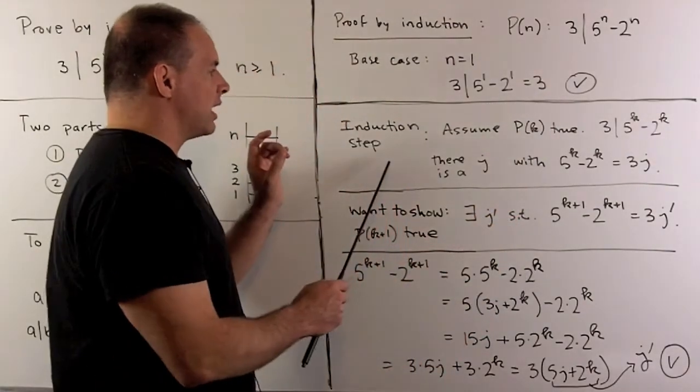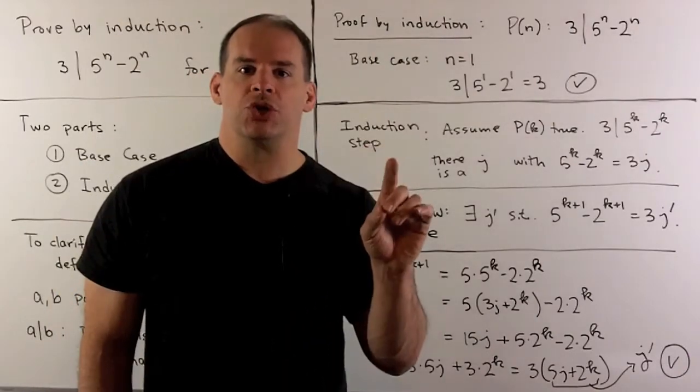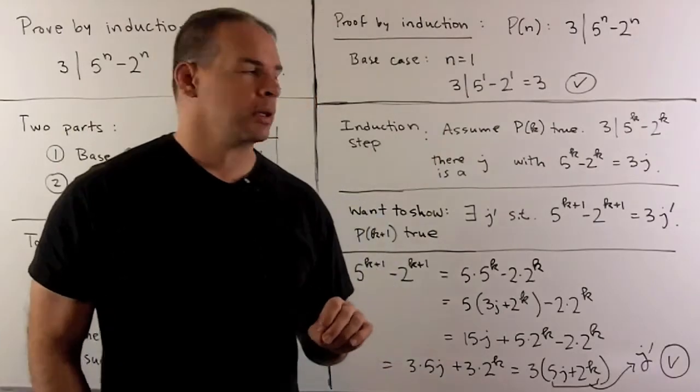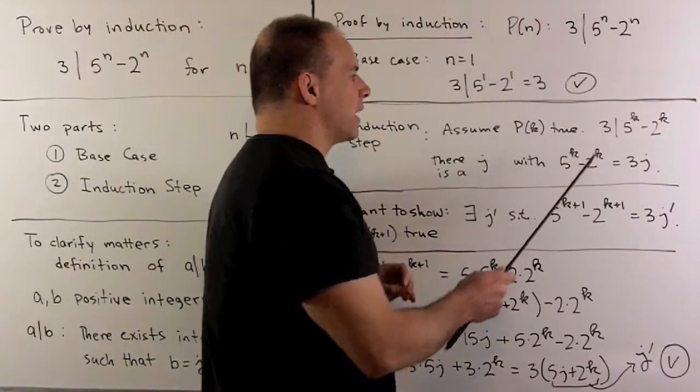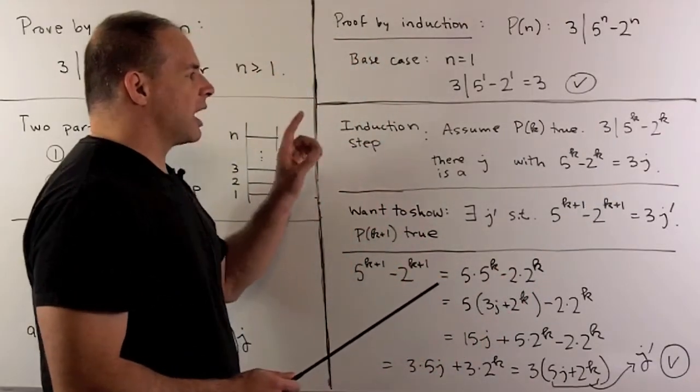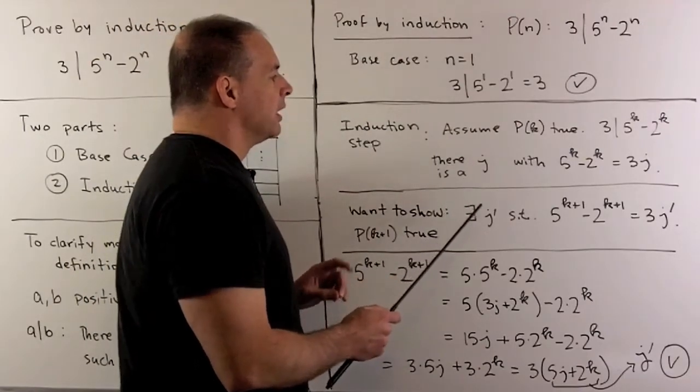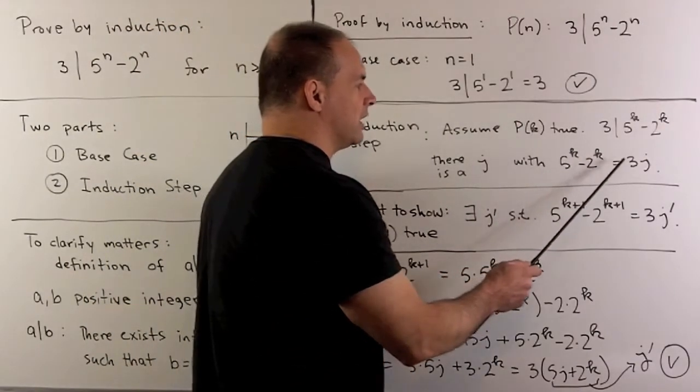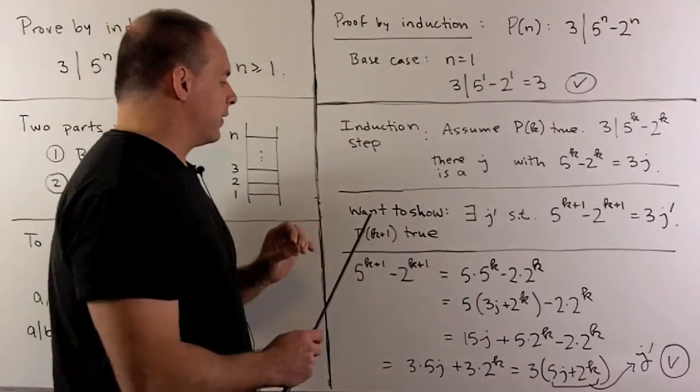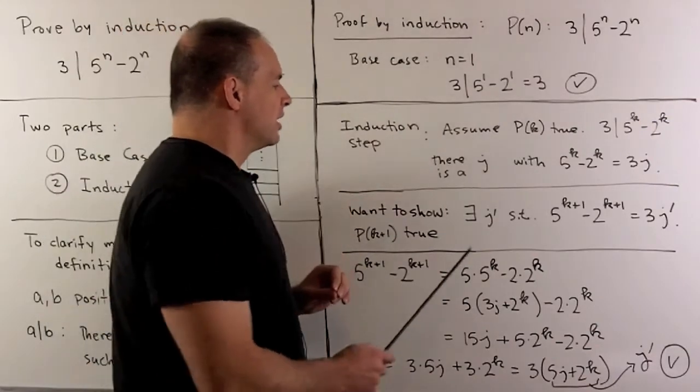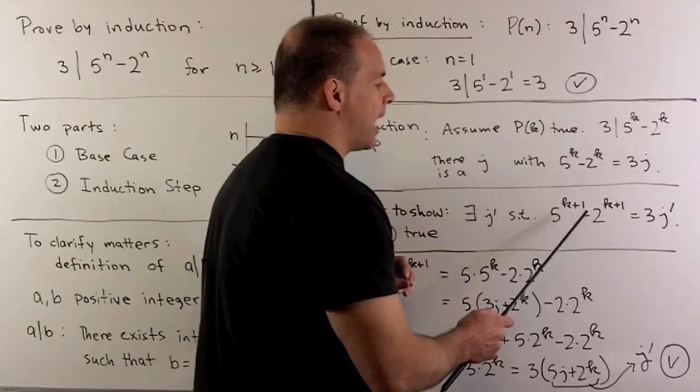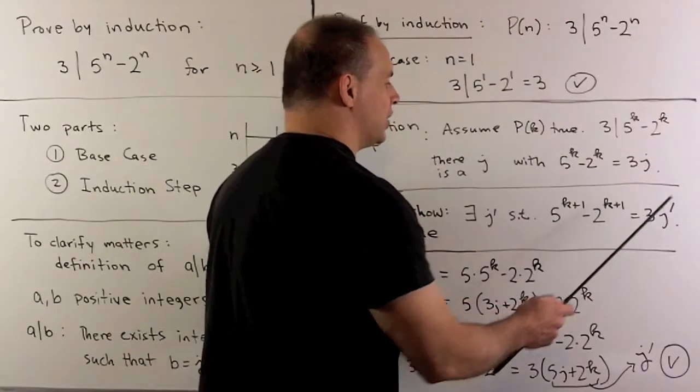Now, for the induction step, we're going to assume that the kth statement is true and use that to show that the k plus first statement is true. Now, our kth statement is that 3 divides 5 to the k minus 2 to the k. And if I go to the definition, this is the same as saying there exists a j such that 5 to the k minus 2 to the k is equal to 3 times j. What we want to prove, the k plus first statement, is that there exists some integer j prime such that 5 to the k plus 1 minus 2 to the k plus 1 is equal to 3 times j prime.